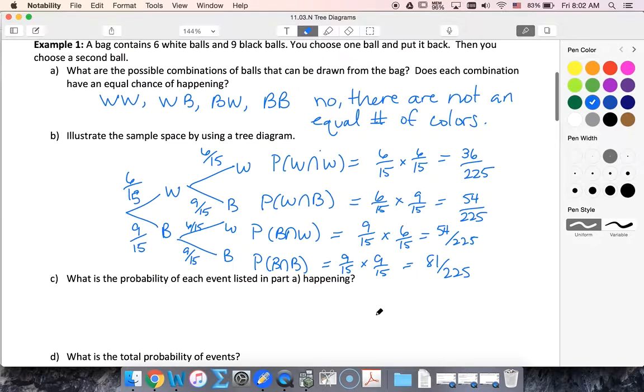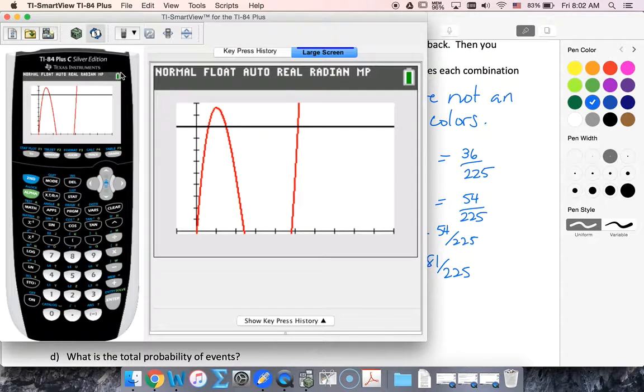The probability of each event, well I listed that above. Total probability of events, let's add those up.